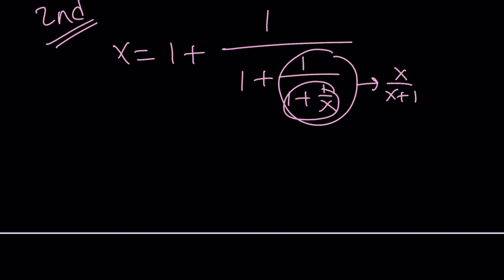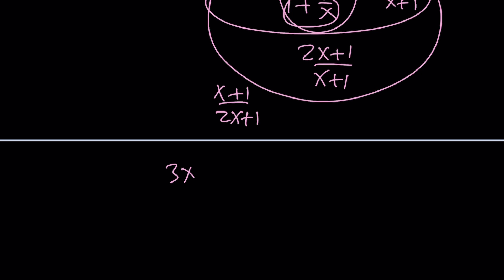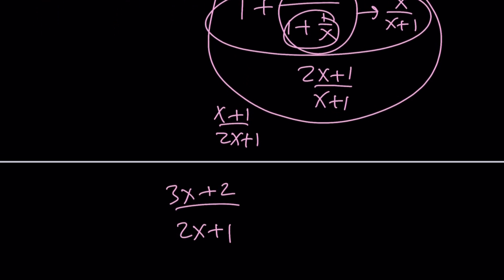So this will be x over x plus 1. When you add 1 to it, it's going to be x plus 1 plus x over x plus 1, which is 2x plus 1 over x plus 1. And when you flip it, it's going to be x plus 1 over 2x plus 1. And when you add 1 to it, you're going to add 2x plus 1 over 2x plus 1. It'll give you 3x plus 2 divided by 2x plus 1.